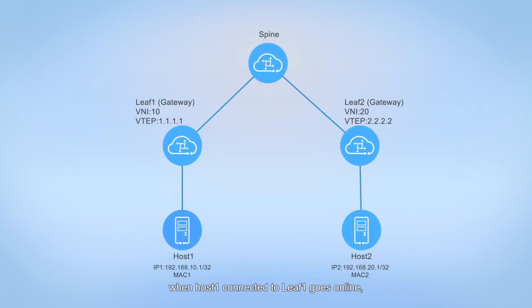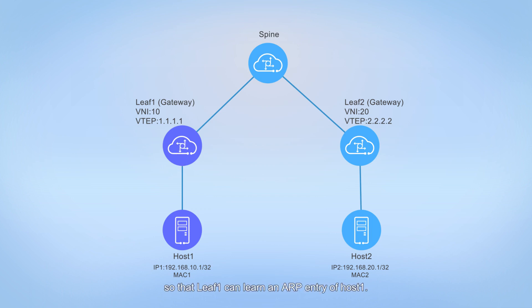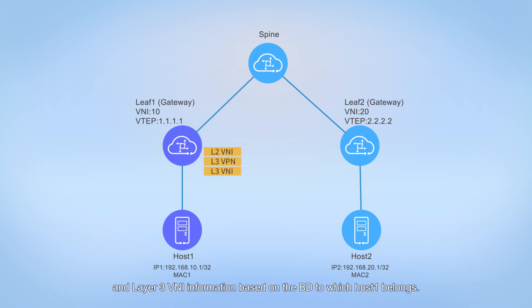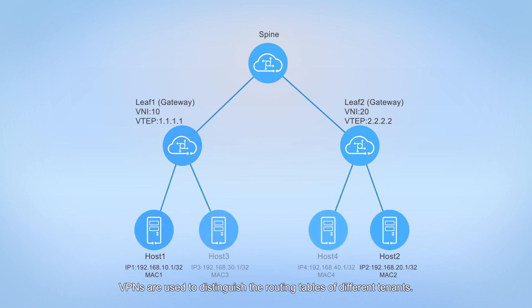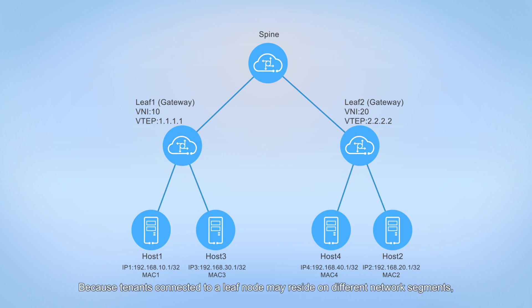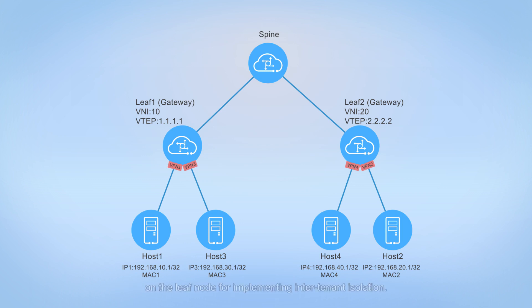For example, when host 1 connected to leaf 1 goes online, it sends an ARP packet to leaf 1 so that leaf 1 can learn an ARP entry of host 1. In addition, leaf 1 can also obtain the corresponding layer 2 VNI, VPN, and layer 3 VNI information based on the BD to which host 1 belongs. VPNs are used to distinguish the routing tables of different tenants. Because tenants connected to a leaf node may reside on different network segments, you need to bind layer 3 gateways to different VPNs to isolate routes on the leaf node for implementing inter-tenant isolation.